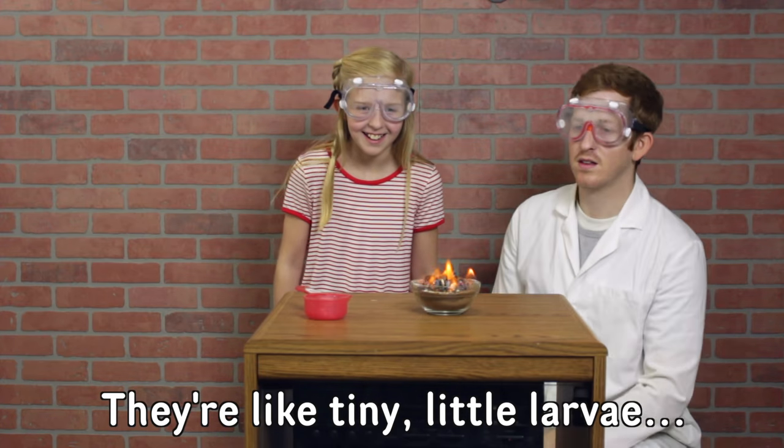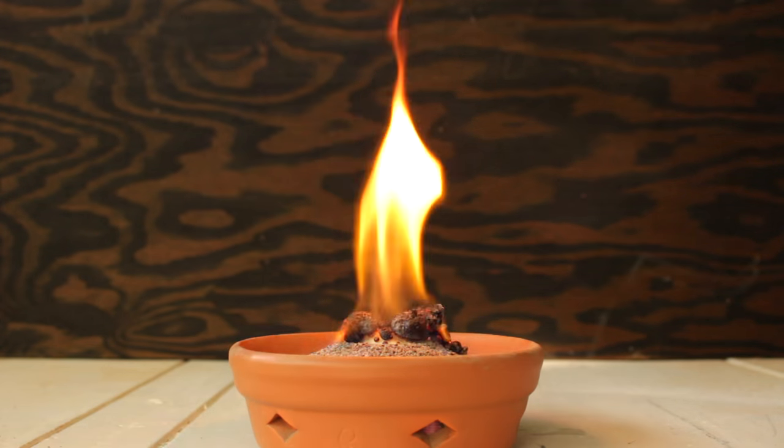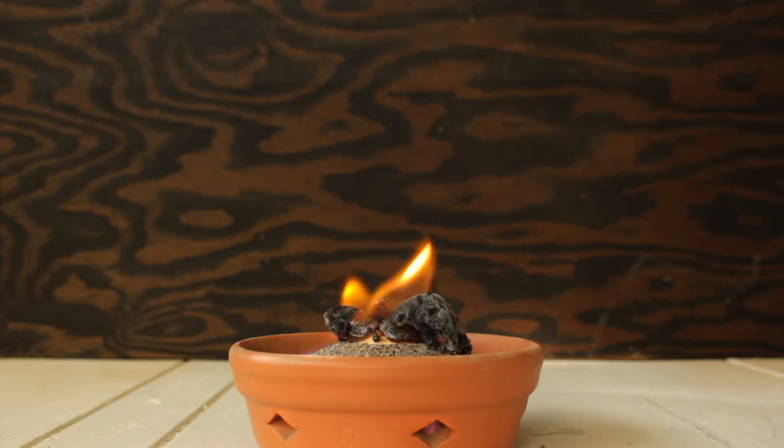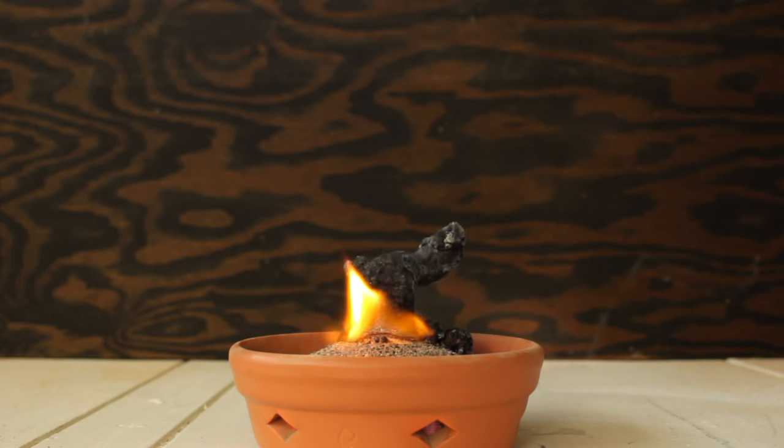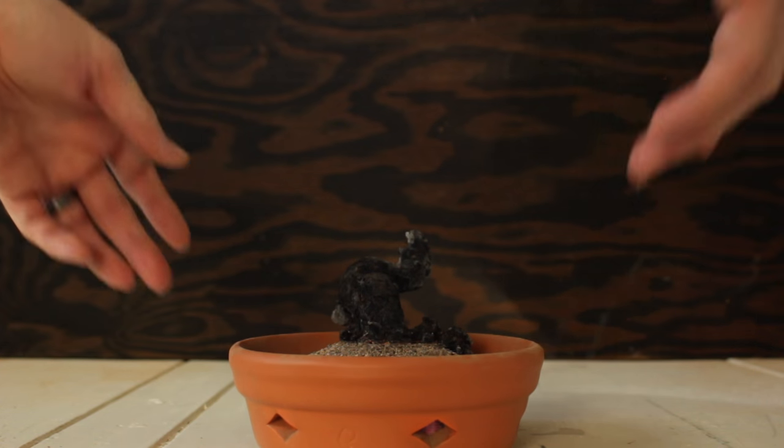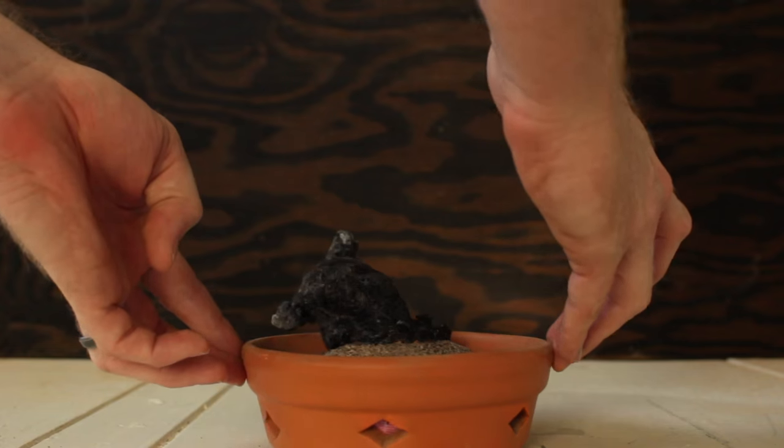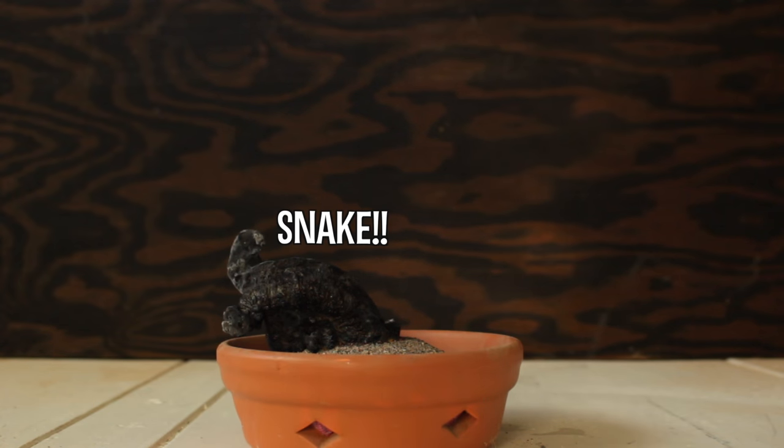Slowly a carbon snake should rise from the sand or carbon larvae, depending on the day. It's like tiny little larvae. There are several reactions happening here, but the main one is how the sugar reacts with oxygen in the air and the fire to break apart into pure carbon atoms and water. The snake itself is mostly made from the carbon atoms, similar to what pencil lead is made out of.